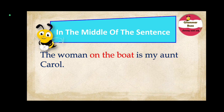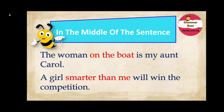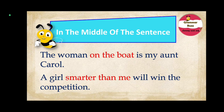Let us take another example: 'A girl smarter than me will win the competition.' Here, 'smarter than me' is the adjective phrase that gives information about the noun 'girl' — not just any girl, but a girl smarter than me. It comes in the middle of the sentence, just after the noun that it modifies.